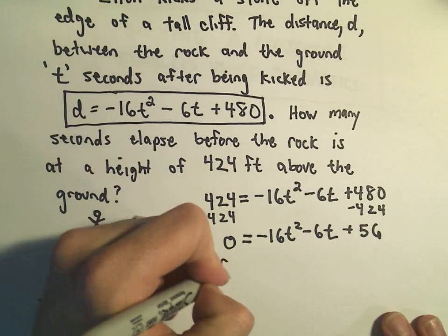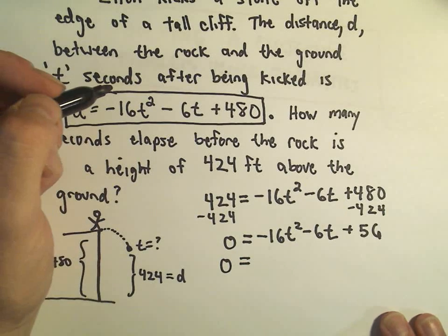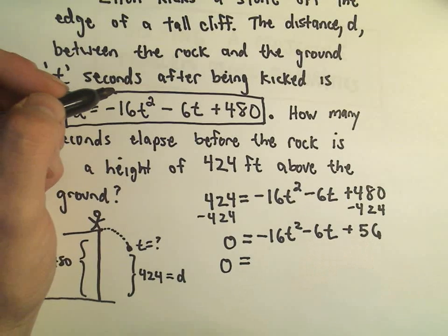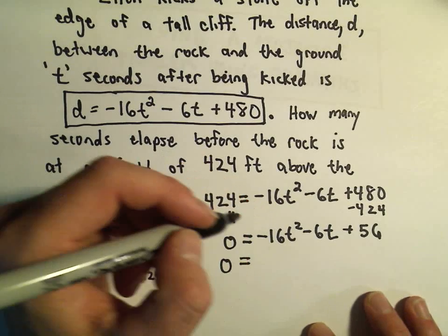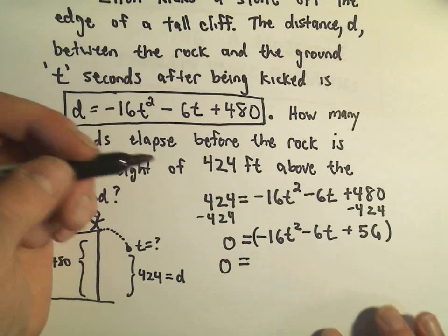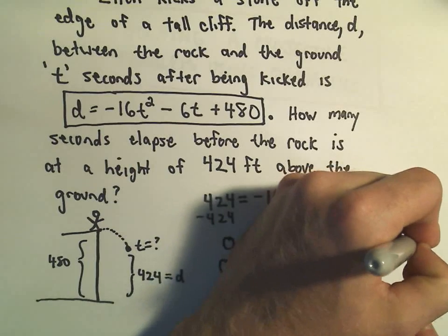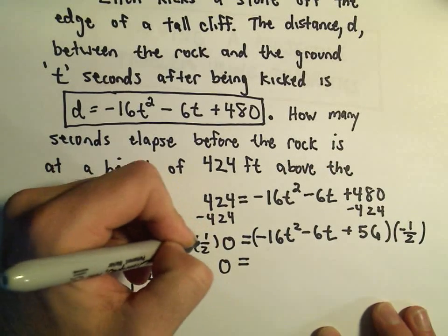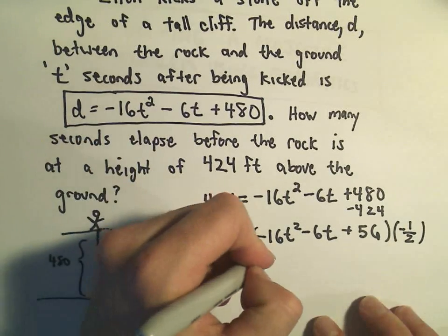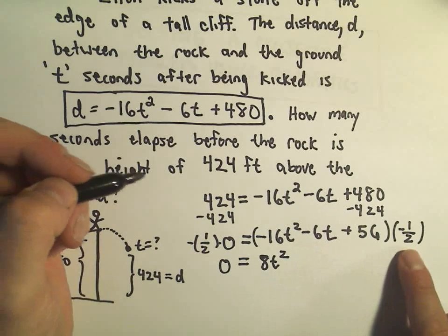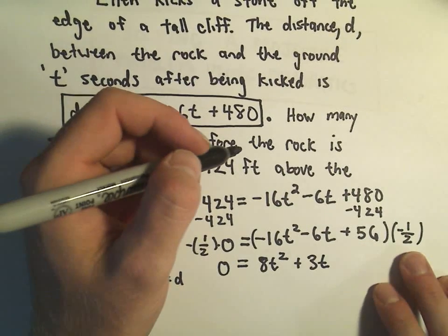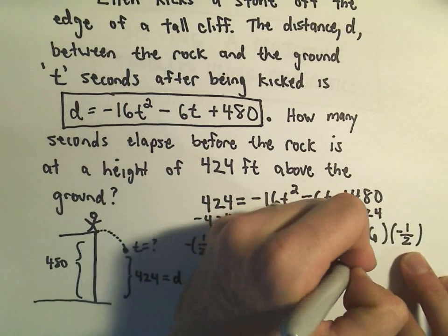So I'm still not sure, you can try playing with numbers, I'm not sure exactly how this factors, but what I'm going to do to make the numbers a little bit better is I'm going to notice that all of these numbers are even, so what I'm going to do is I'm going to divide everything by 2. But actually, to get rid of the negative, I think what I'm going to do is multiply by negative 1 half. Negative 16 divided by negative 2 would be 8t squared, negative 6 divided by negative 2 would be positive 3t, and positive 56 divided by negative 2, I believe that would be negative 28.